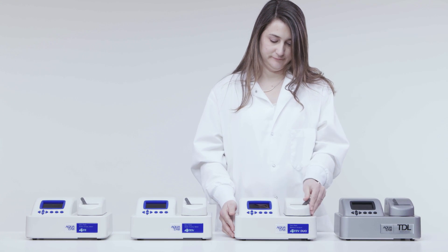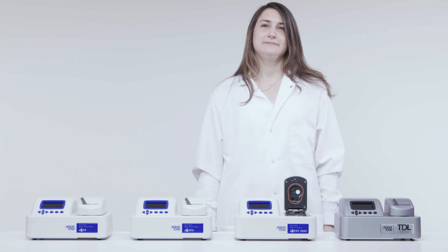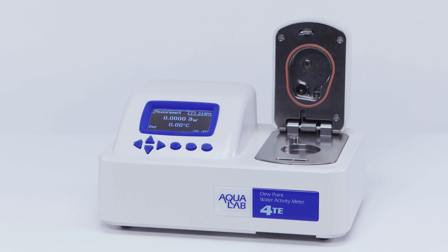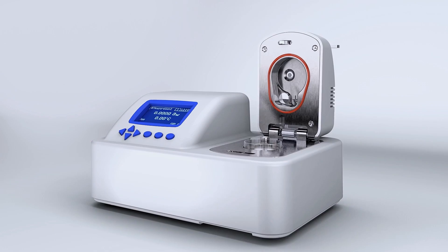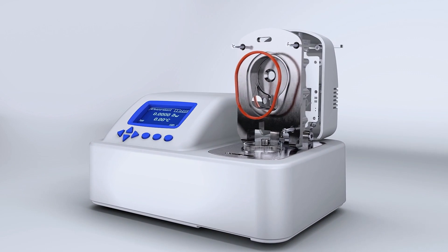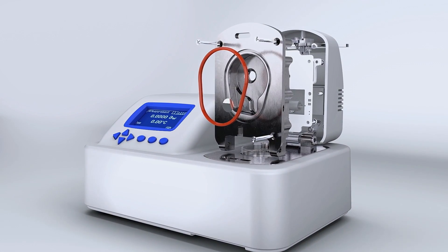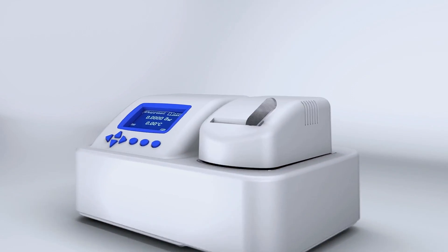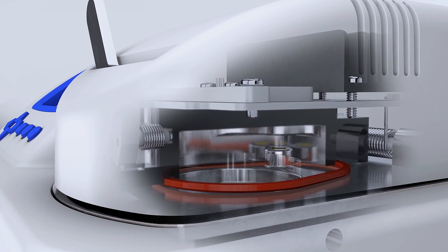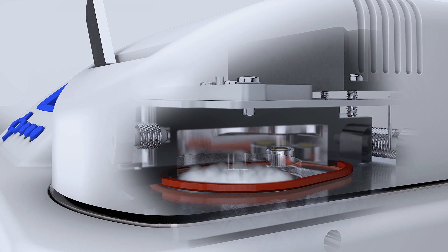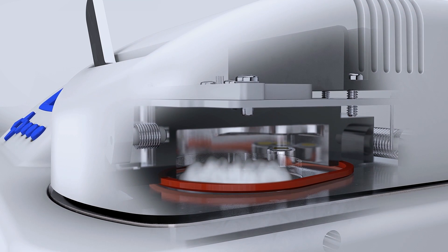There are four different types of Aqualab water activity meters. The one we're using in this video is the Aqualab 4TE. It uses the chilled mirror dew point method to measure water activity. When a sample is put into the chamber and the block is sealed, it comes to vapor equilibrium. Water molecules enter the air above the sample, and then the mirror is chilled until dew forms.